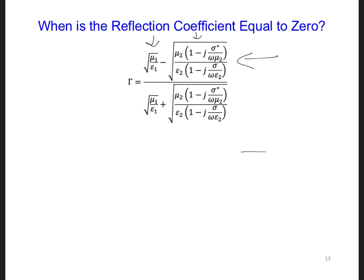And in order for the second term to always equal the first term, we need to have mu2 equal to mu1, and we need also epsilon2 to be equal to epsilon1. Furthermore, we need this term to always equal 1.